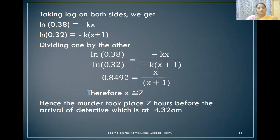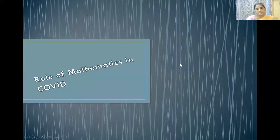Hence, we come to the conclusion that the murder took place 7 hours before the arrival of the detective, which means it took place exactly at 4:32 AM. So using the concept of differential equations and Newton's law of cooling, we found the time of death of a person.